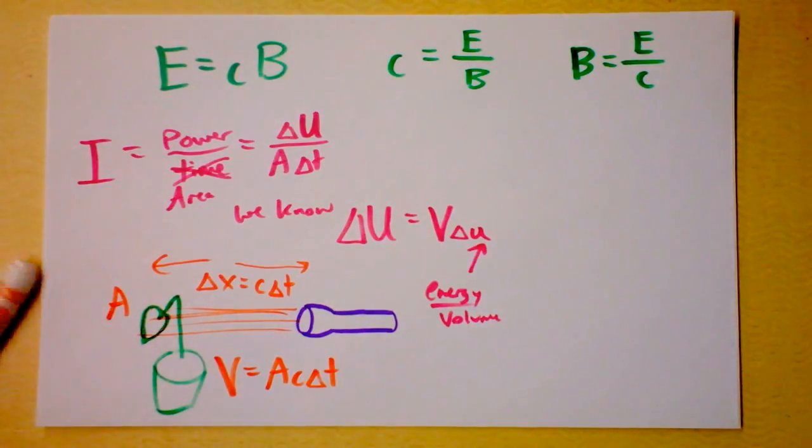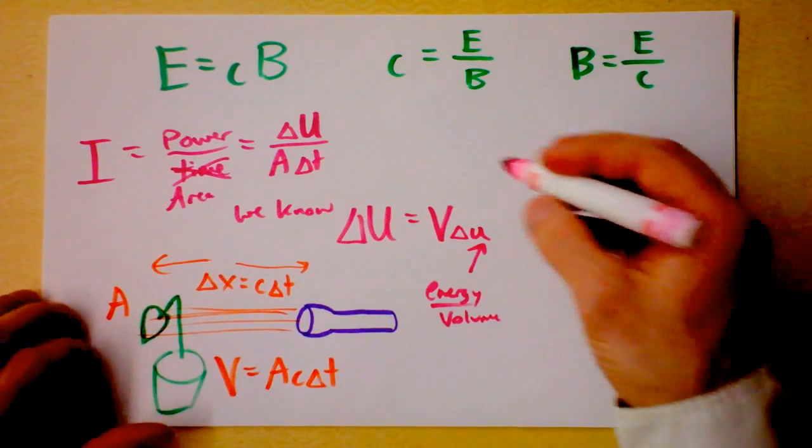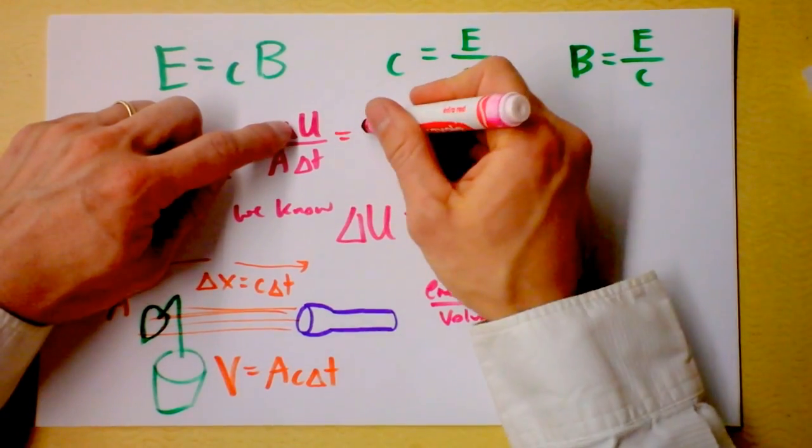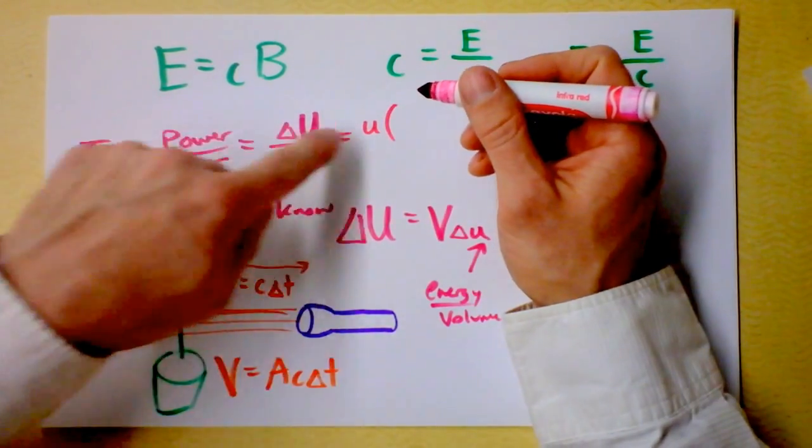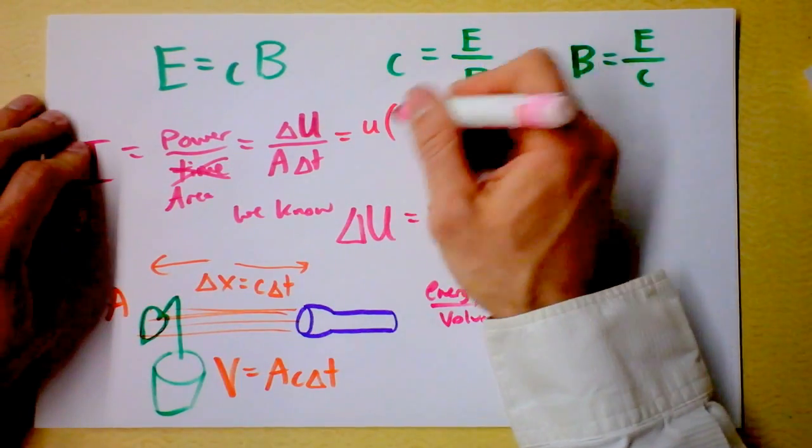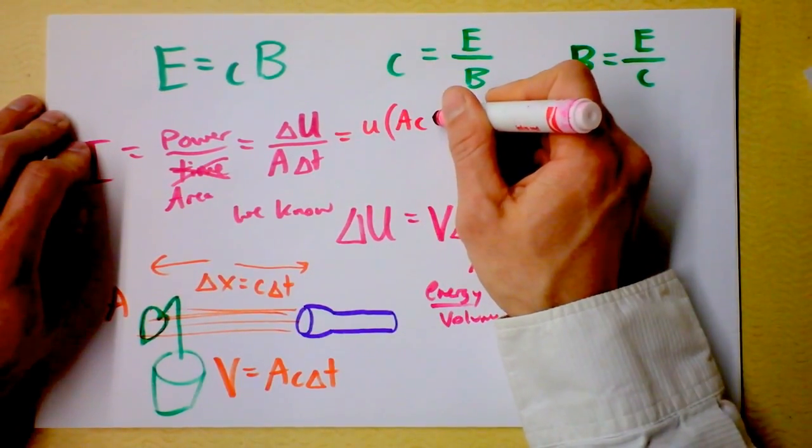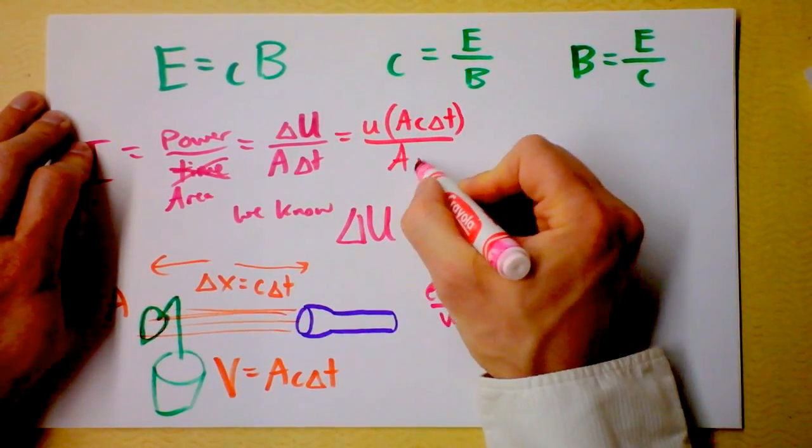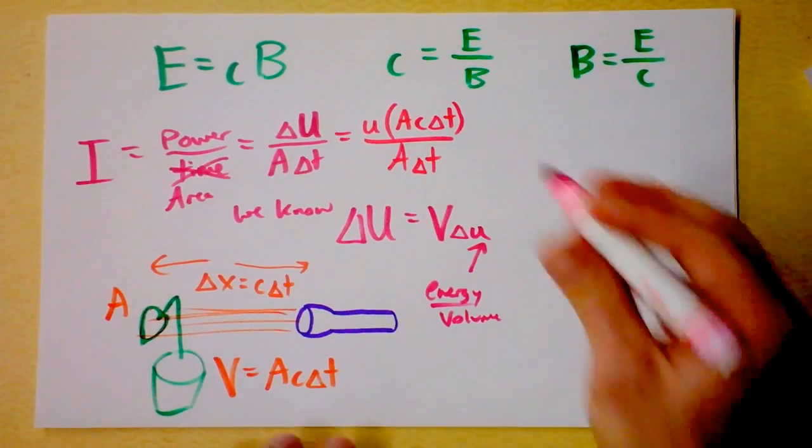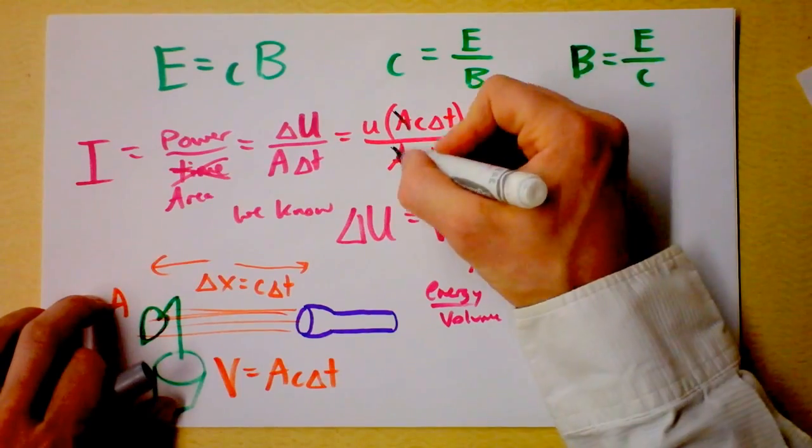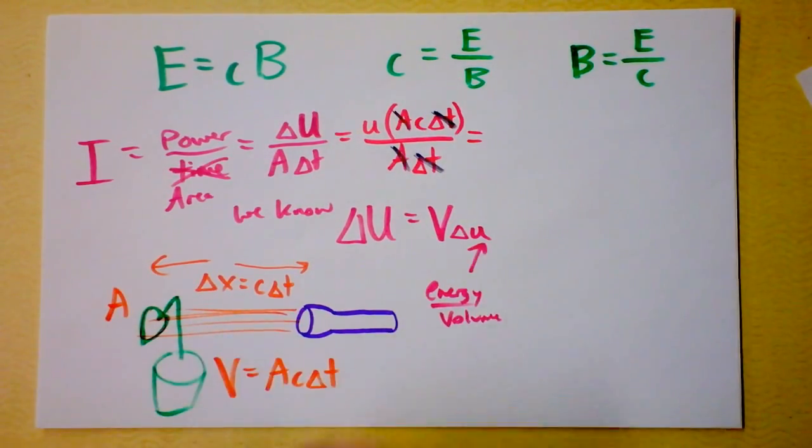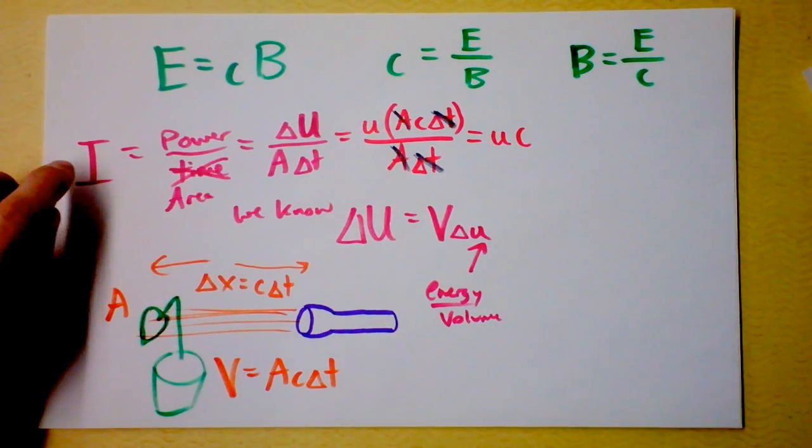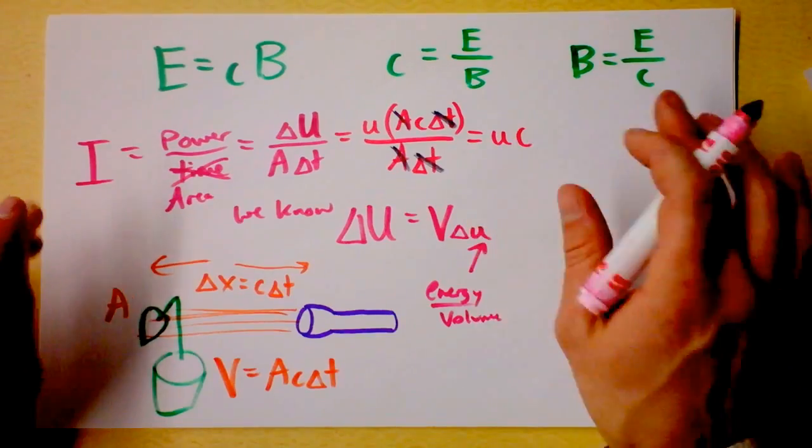Now let's take all of this business back up into here. My plan now is to say that we've got, instead of energy change, we've got energy density change times the volume of light, which is a cat. And then we're supposed to divide this still by area and time. And are you thinking what I'm thinking? That and that and that. We've suddenly just got energy density times the speed of light. That's what the intensity of light is. It's the energy density of the light times the speed of light.